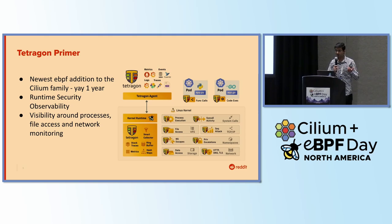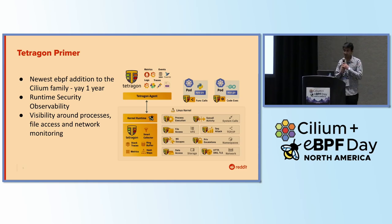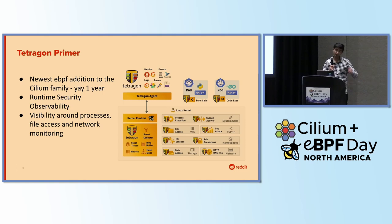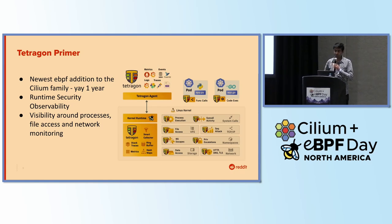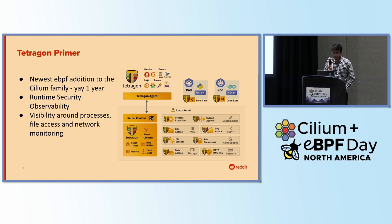A quick primer on Tetragon. This is not a replacement of the documentation — if you're starting your Tetragon journey, go read the documentation. Tetragon is one of the newest additions to the Cilium and Isovalent family. It's been GA for one year, since last November. It's been available for beta testing for two to three years. It's primarily for runtime security observability, with all the eBPF hooks and features we like — mainly for visibility around processes, file access, and network monitoring.